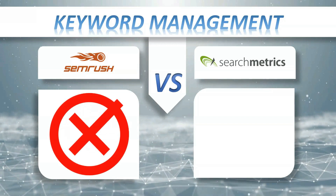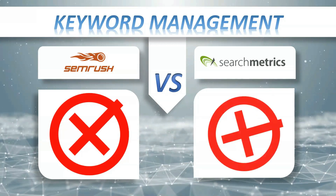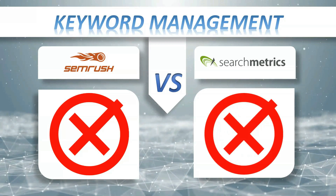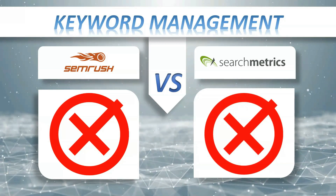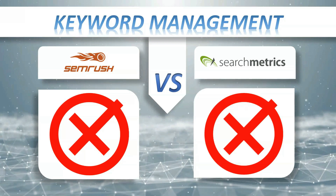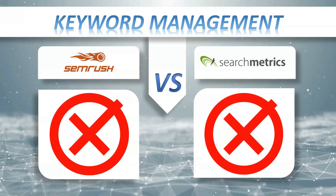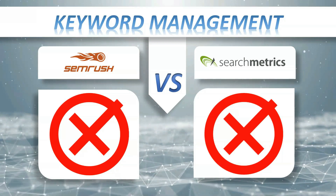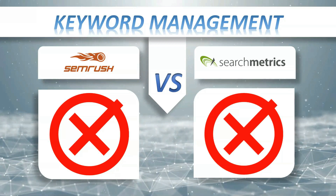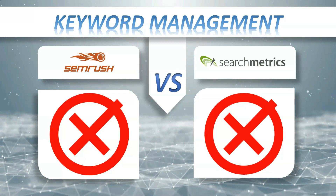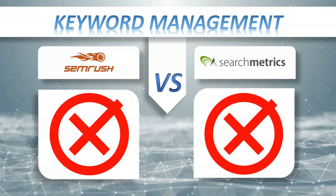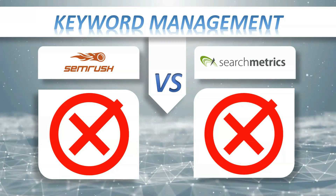Keyword Management: SEMrush has it, Search Matrix Essentials no. Keyword management is an innovative and multi-phased approach to discovering, analyzing, grouping, and organizing large numbers of keywords with the objective of prioritizing, collaborating, and acting on keyword data.